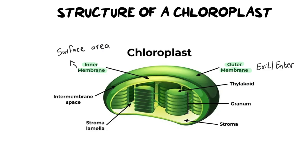The next structure — the real star of the show — is the thylakoid. Thylakoids are these stacked, coin-like structures. One thylakoid, drawn from the side, looks like a singular coin. When we stack thylakoids on top of each other, we make something called a granum — one stack. Many of these granum are called grana, which is literally a plural of a plural. So: a thylakoid is one, a granum is a stack of thylakoids, and many granum are called grana. We really need to be on top of our terminology.